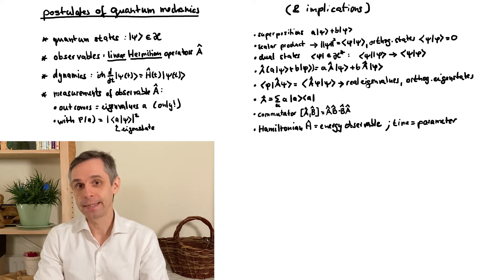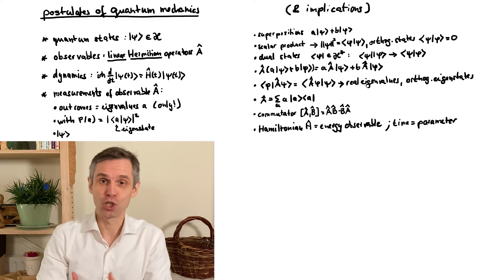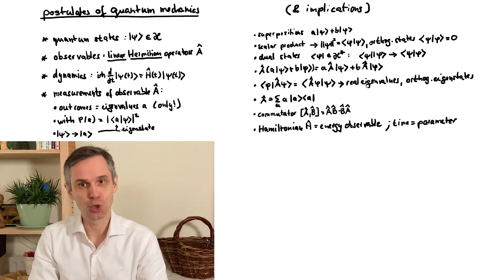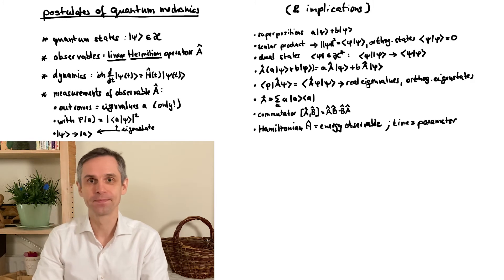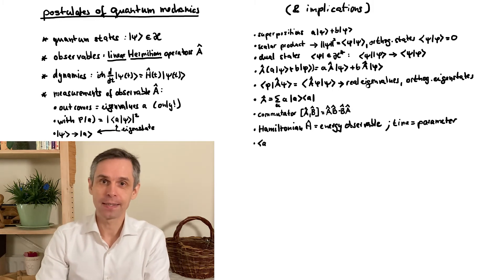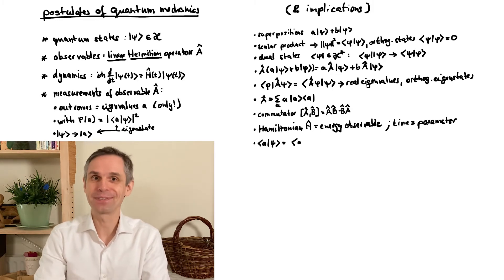And finally, right after the measurement, the quantum state has changed and now coincides with this eigenstate a that corresponds to the observed value. So as a matter of fact, the coefficient a psi is the scalar product between the states after and before the measurement.